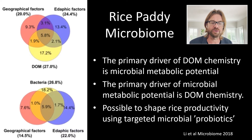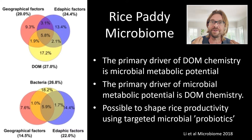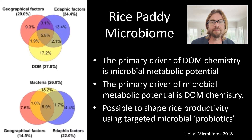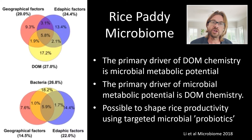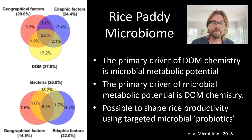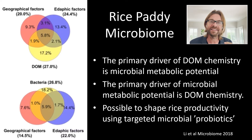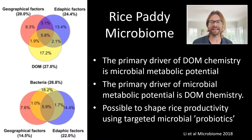Interestingly, and maybe expectedly, the converse is also true: the microbial community is predominantly driven by the dissolved organic matter chemical diversity. Therefore, it's possible to shape rice productivity by using targeted microbial communities that can best access and activate the nutrient content of that dissolved organic matter.